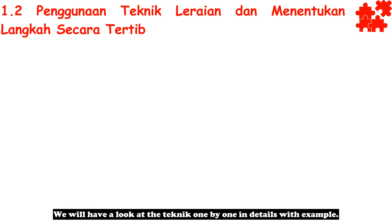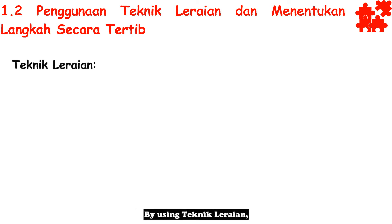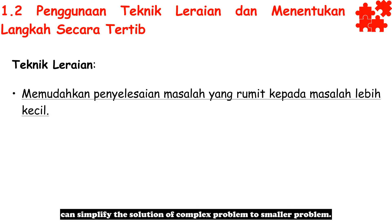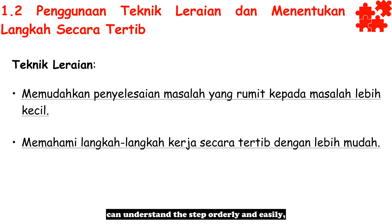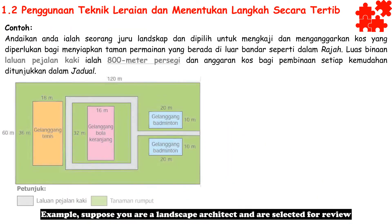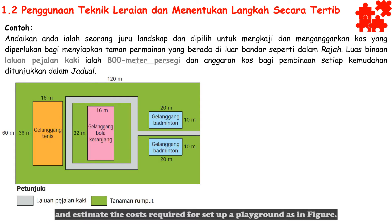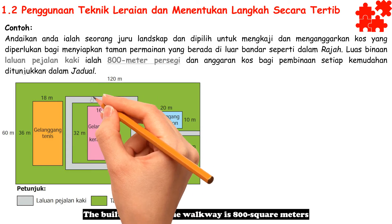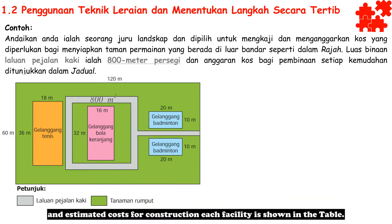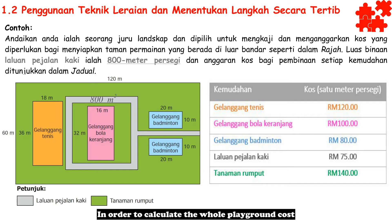Let's look at each technique in detail with examples. First technique — Teknik Leraian. By using Teknik Leraian, you can simplify the solution of a complex problem into smaller problems, understand the steps orderly and easily, and give a better explanation to others. Example: suppose you are a landscape architect asked to calculate the cost required to set up a playground as shown in the figure. The build-up area of the walkway is 800 square meters, and the estimated cost for each facility is shown in the table.